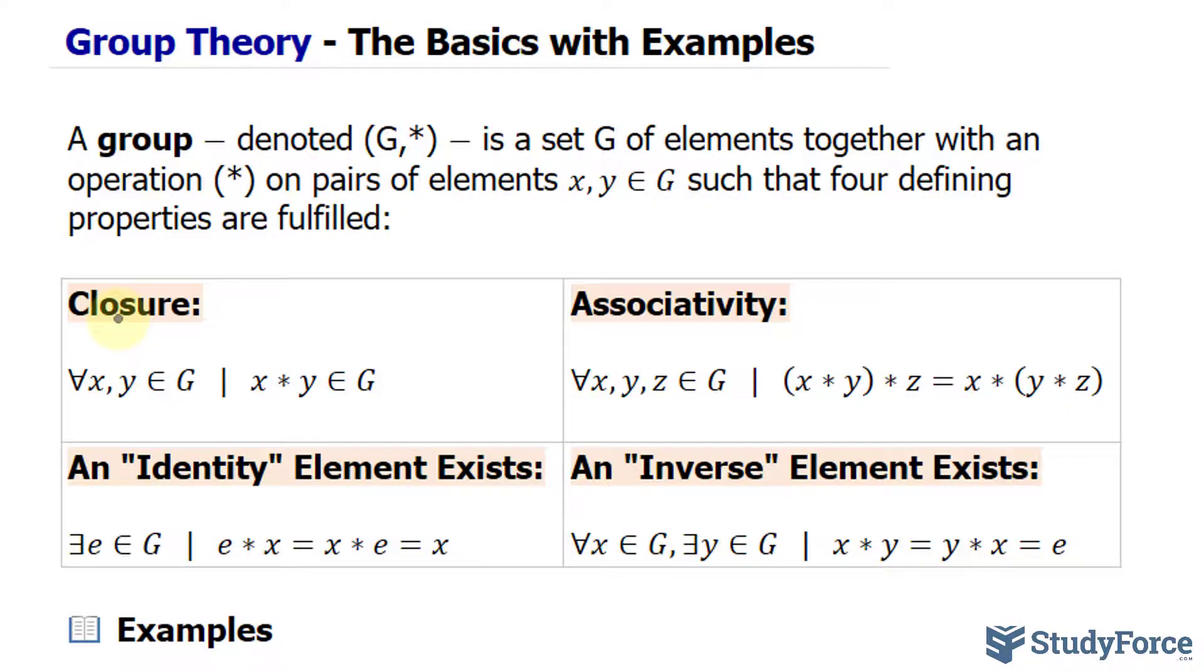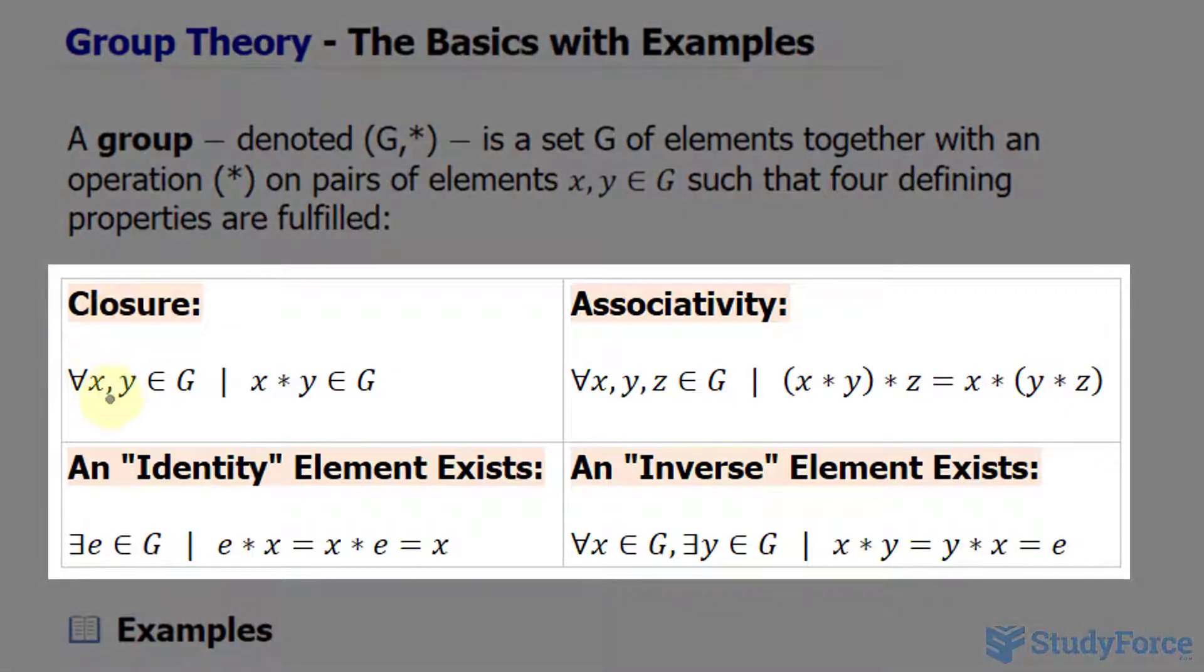The first property is closure. If you have two elements x and y, then x plus y will also be in G, and x times y will be in G.